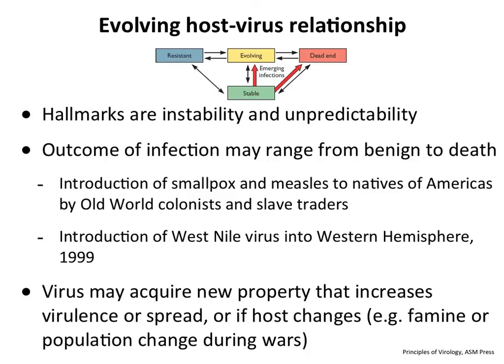Evolving host-virus relationships start with a virus in a stable relationship in some other animal cycle that somehow infects us. The virus replicates and begins to transmit among humans — it's an evolving relationship. These are typically unstable and unpredictable: the outcome can be nothing, or it can kill you, as Ebola does. Examples include the introduction of smallpox and measles to natives of the Americas by old world colonists.